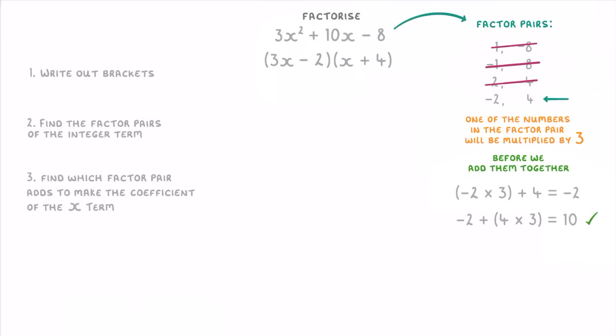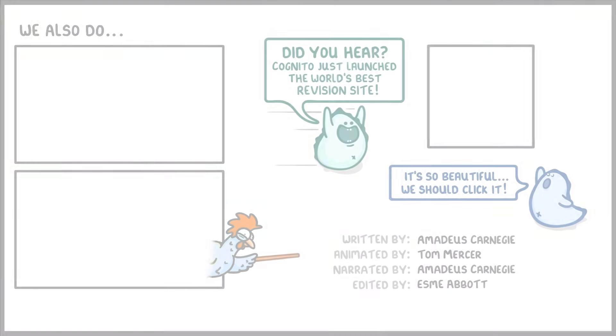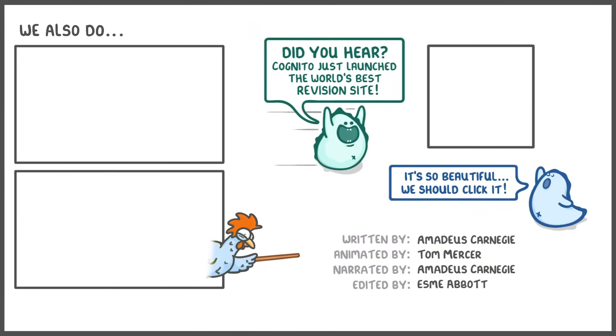As you may have noticed, this one took a while because the correct factor pair was the very last one we tried. This happens sometimes and isn't really a problem — some questions just take longer than others. Once you get used to it though, you can start to see which factor pairs are most likely to work and try those first. Anyway, that's everything for this video — hope you found it useful, and cheers for watching.